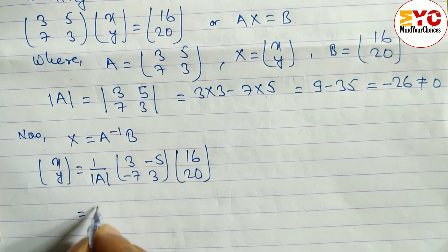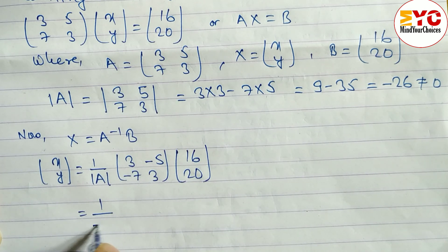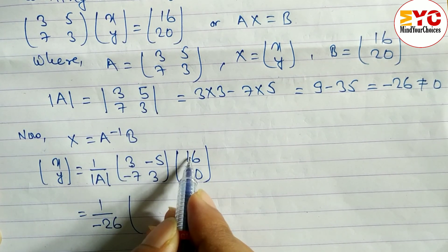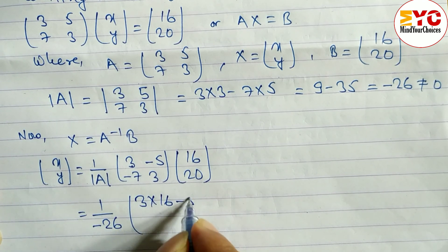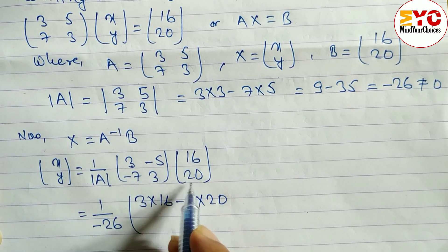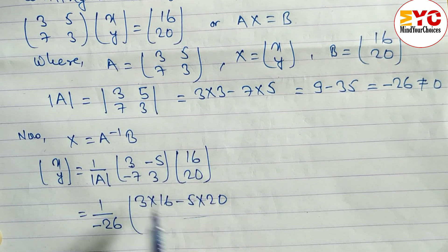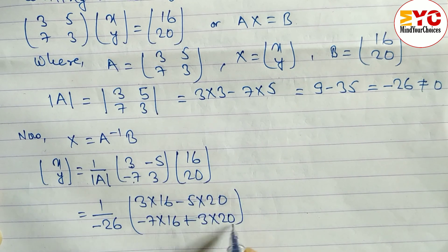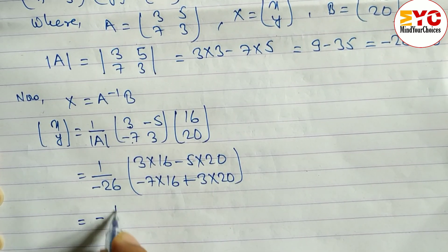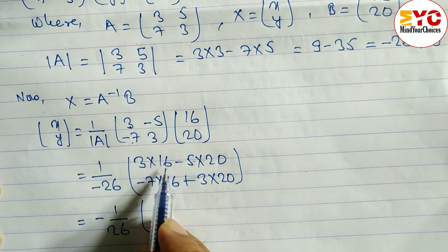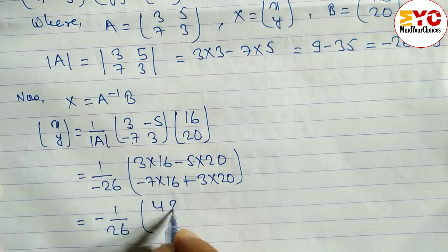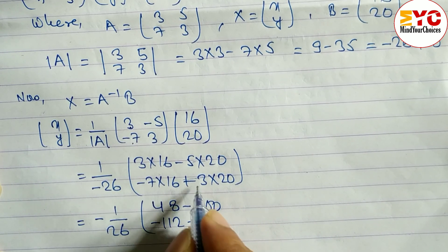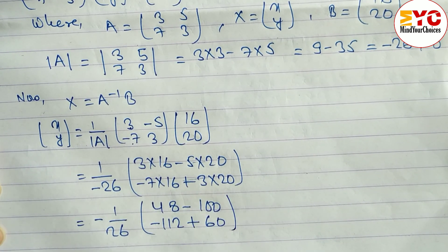So we have 1 over minus 26, multiplied by the matrix product. For the first row: 3×16 minus 5×20. For the second row: minus 7×16 plus 3×20. Calculating: 3×16 = 48, 5×20 = 100; then minus 7×16 = minus 112, and 3×20 = 60.